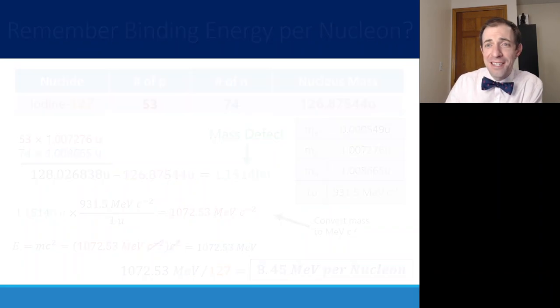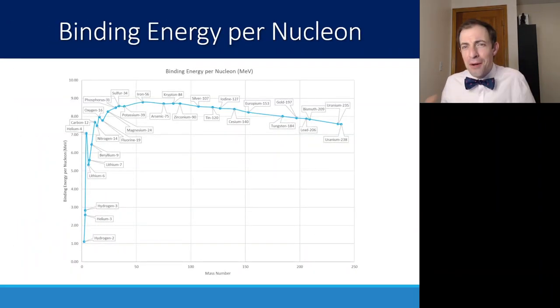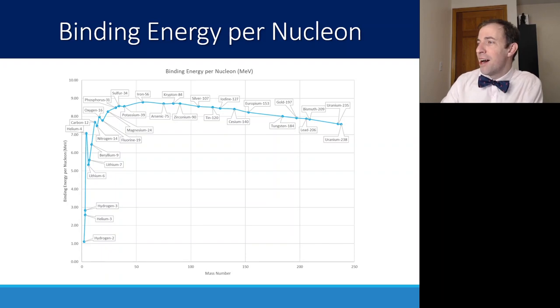For every single element there is, we get a graph that looks something like this. This graph is representing the mass number here on the x-axis, and the binding energy per nucleon on the y-axis. And you'll see a distinct shape showing up here. There are a couple areas here that make these little peaks, like there's a peak at helium-4.